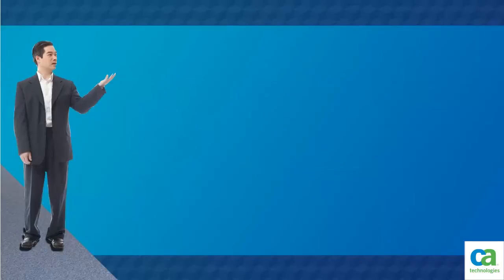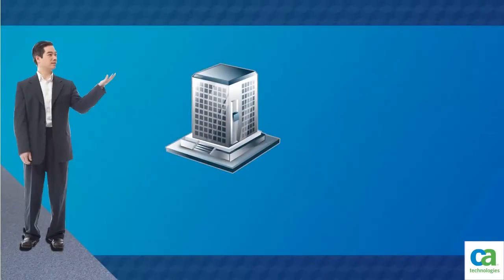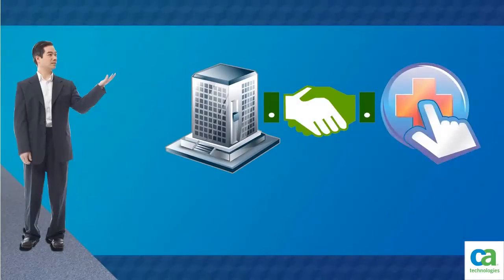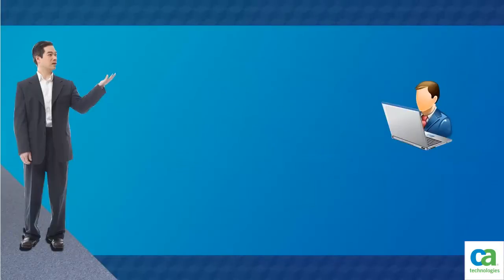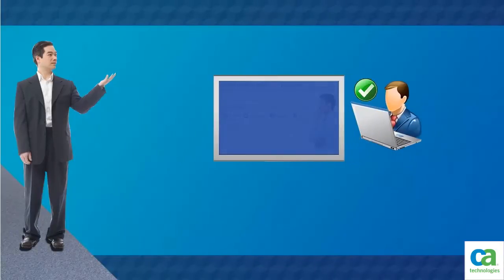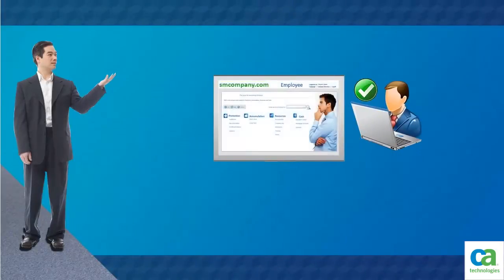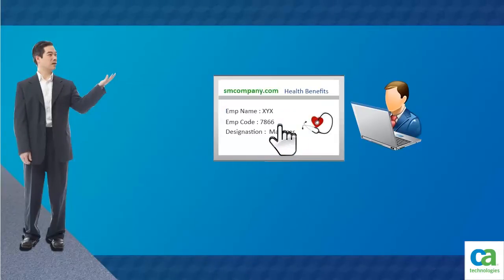In our example, an organization named smcompany.com contracts with a partner, ahealthco.com, to manage employee health benefits. An employee of smcompany.com authenticates himself at the company website. Then, he clicks a link to view his health benefits at ahealthco.com.